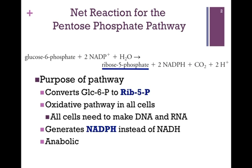All cells need to make DNA and RNA, and ribose 5-phosphate, as we'll see in a later lesson, is the sugar base to make all the nucleotides we need to form those DNA and RNA molecules. Since the pathway is overall oxidative, we will generate reducing equivalents. In this case, we generate NADPH rather than NADH because the pathway is anabolic. One of our side products is CO2, as highlighted by the red circle. So overall, the pathway is oxidative decarboxylation.